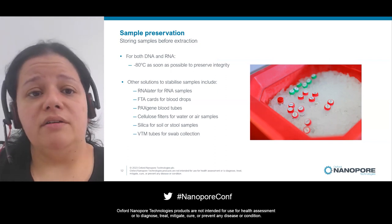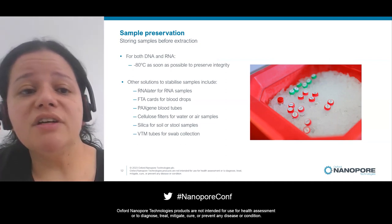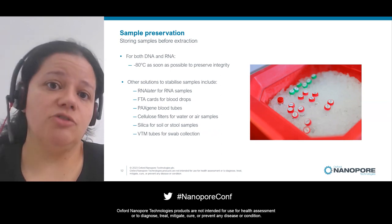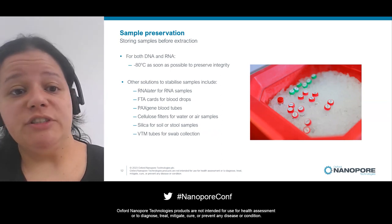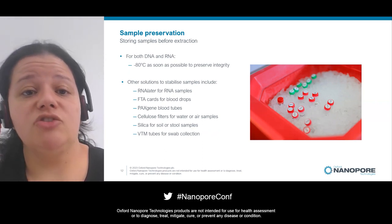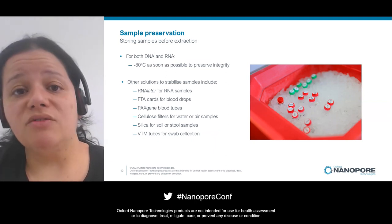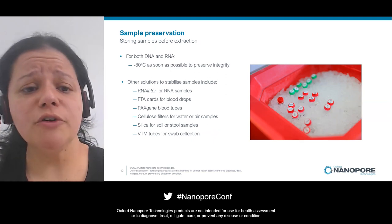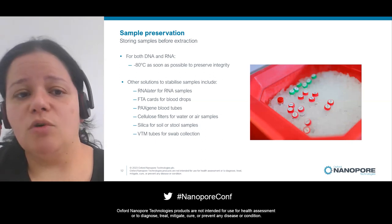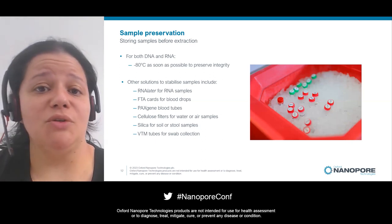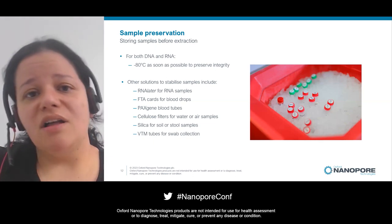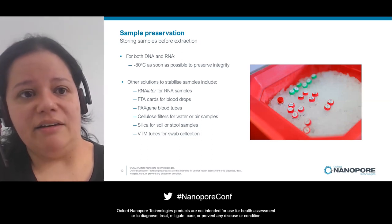As a general rule for both DNA and RNA, ideally keep samples at -80°C to preserve integrity. If you don't have a -80°C freezer — for example on the field or when shipping — there are other solutions: RNA later for RNA samples, FTA cards for blood, PAXgene blood tubes for RNA, filters for environmental water and air samples, silica beads for soils or stool, and viral transport media for swabs. Whatever your sample, you'll have alternatives to keep it stable until you can preserve it properly.